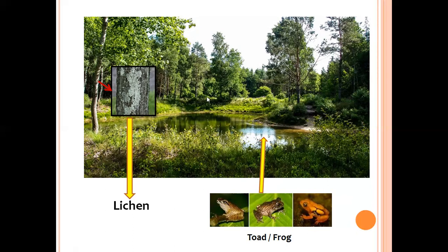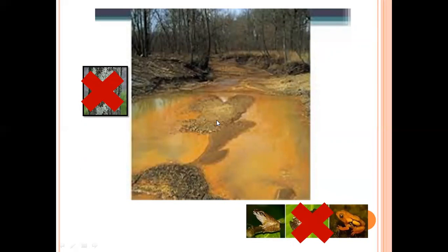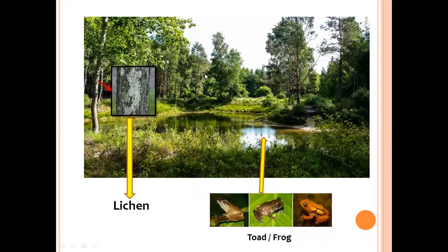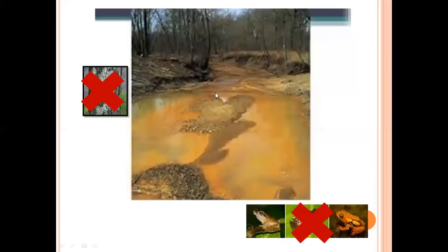Such species that disappear act as indicators, telling us that something undesirable has changed in their environment. For example, if mining activities contaminate the water with acid mine drainage, the water quality changes and becomes unsuitable for the amphibian species living there. They are unable to adapt, and start disappearing — resulting in no life forms found in that water body.